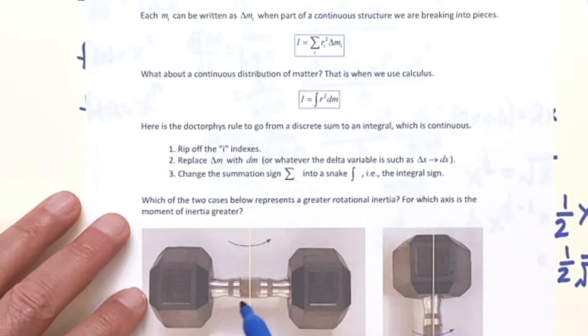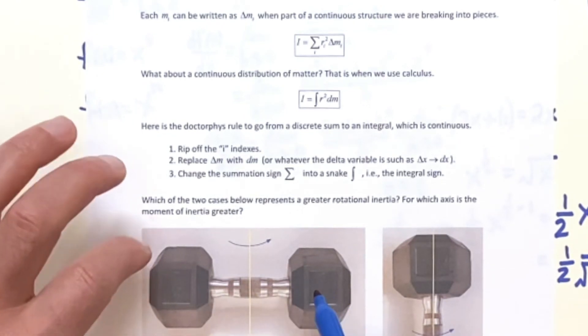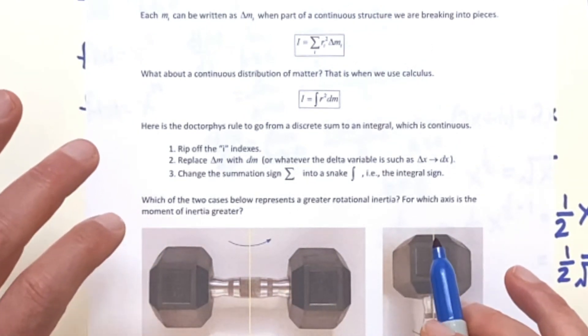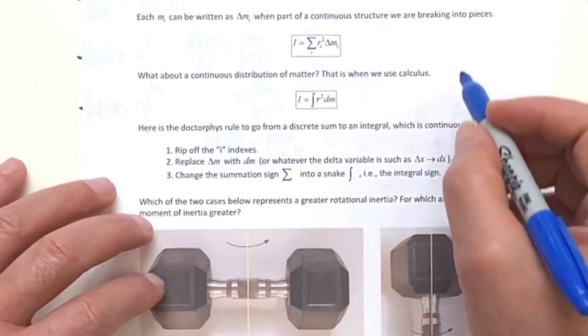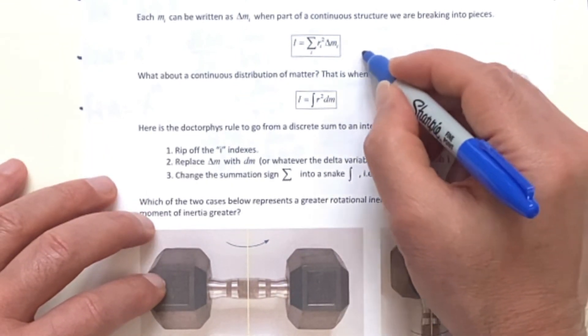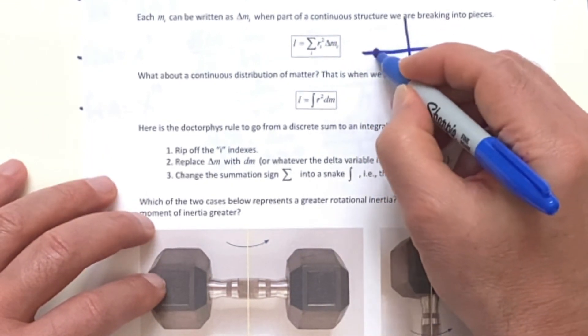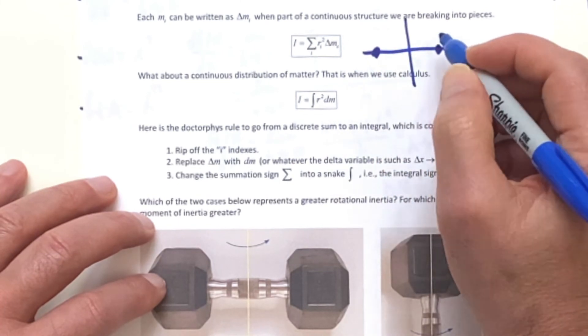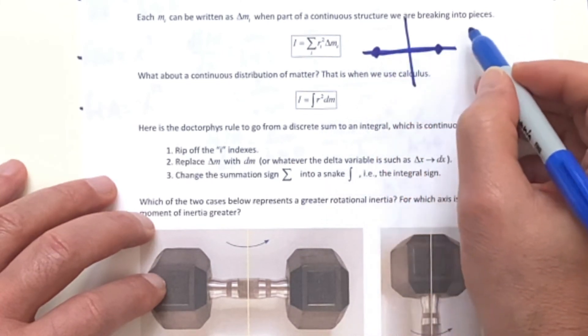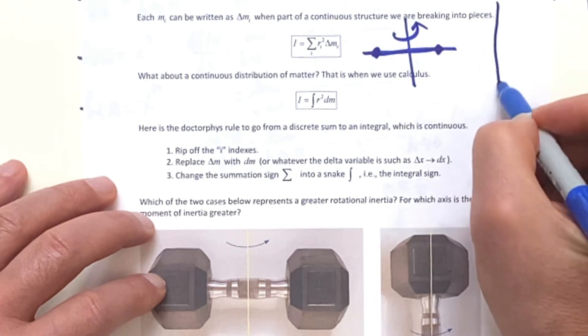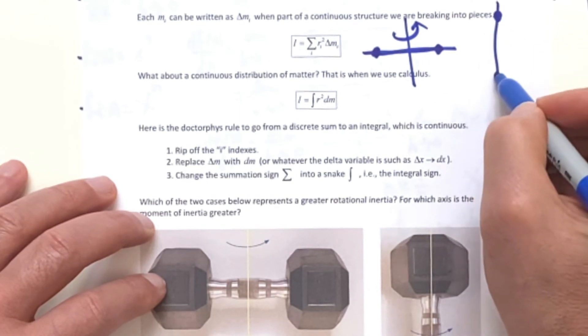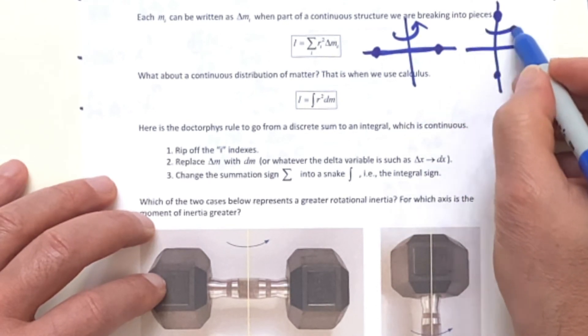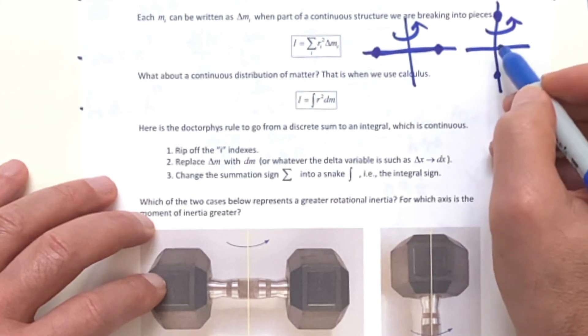OK, now here we have two chunks of matter. And we looked at this earlier before. This would be like a point here and a point there. So I need something connecting them going around. And then here we have them like this. And the question we asked is, which one has greater rotational inertia?